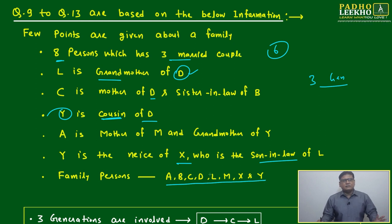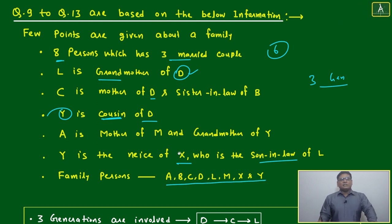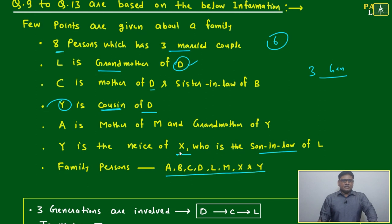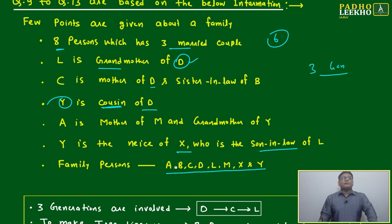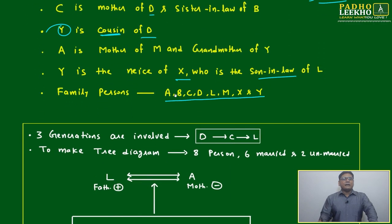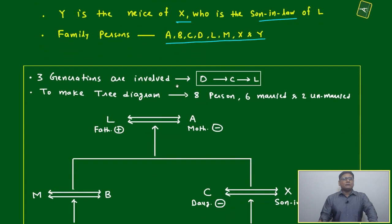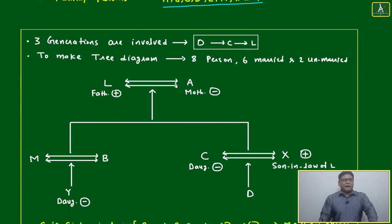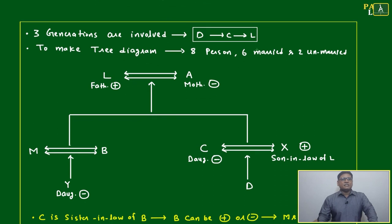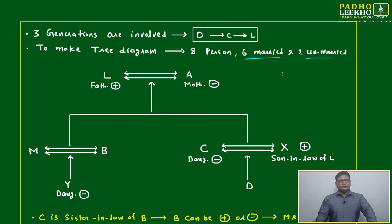The first thing we have to find is how many generations — three generations. Then we have to find the three married couples. Who are the three married couples? Six people are married and two are unmarried.